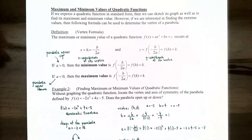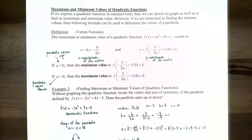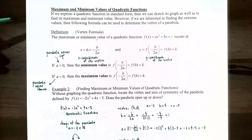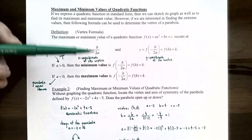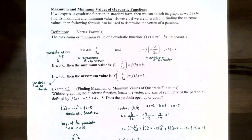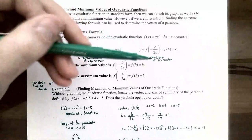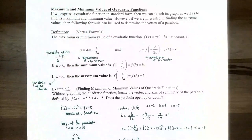Notice this formula tells us the vertex without changing the function to vertex form or graphing at all. The x-coordinate is negative b over 2a, and the y-coordinate is found by substituting that x-coordinate into the function to get the value of k.